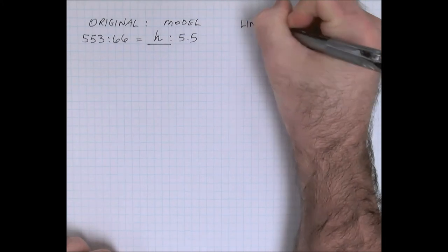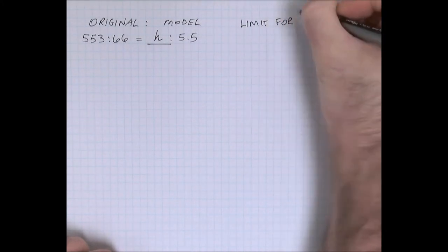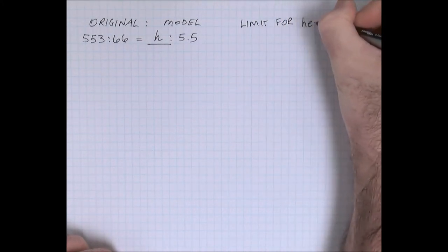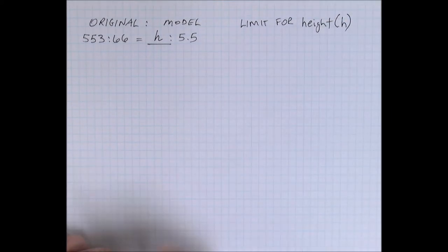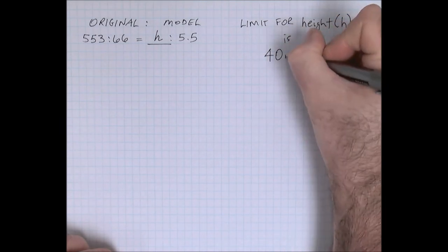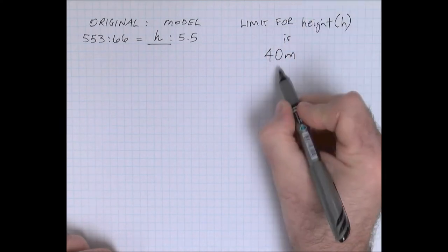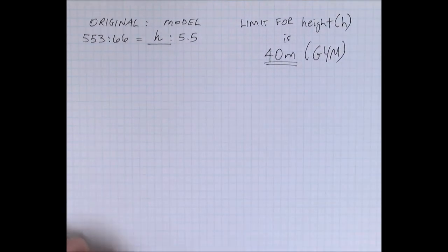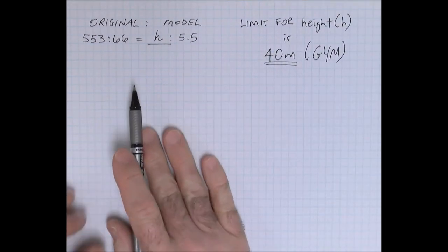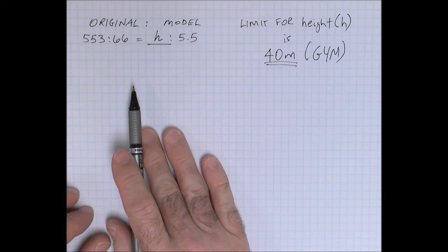there's a limit in this question. The limit for the height that we're representing with the variable h is 40 meters. So that's the height of the gym. So this task doesn't tell you to set up a proportion, but